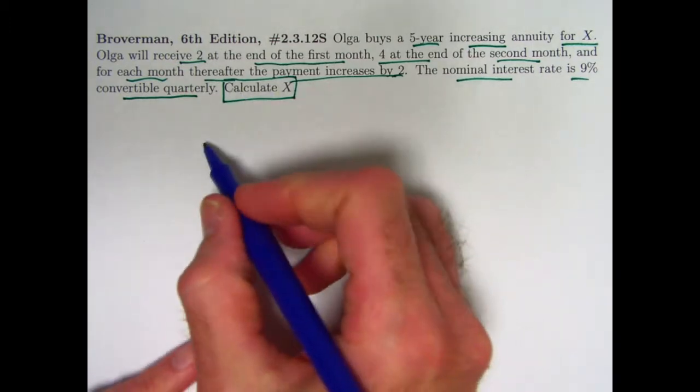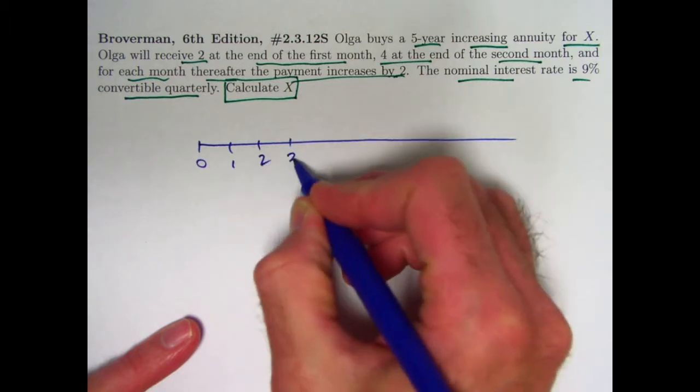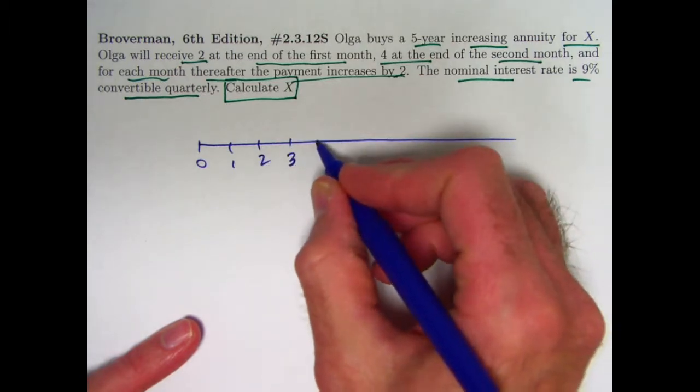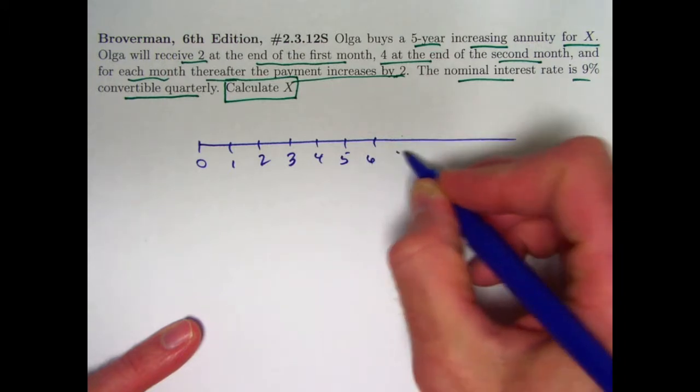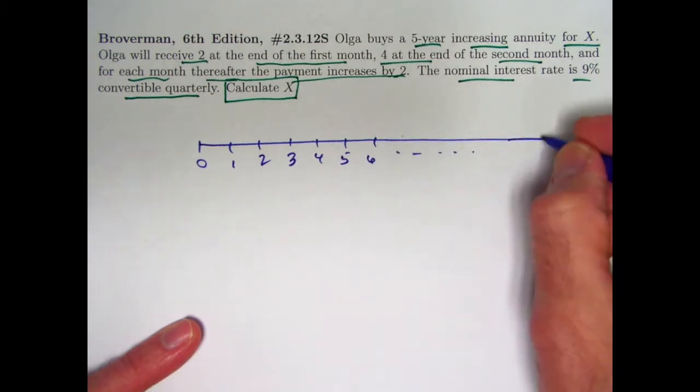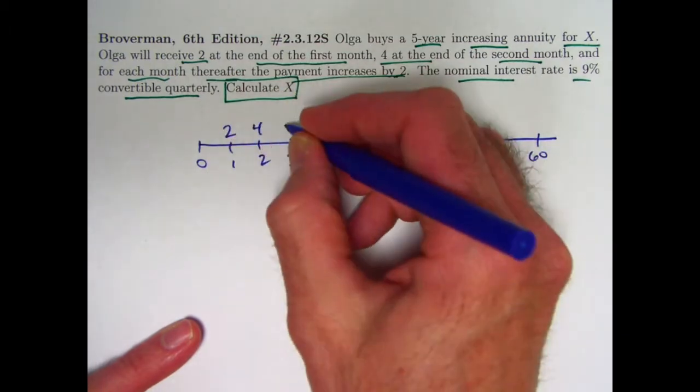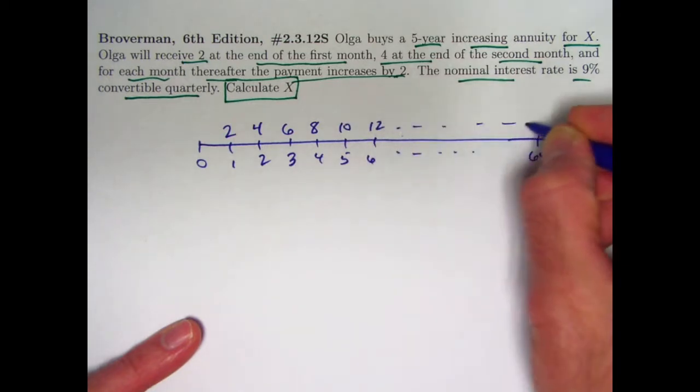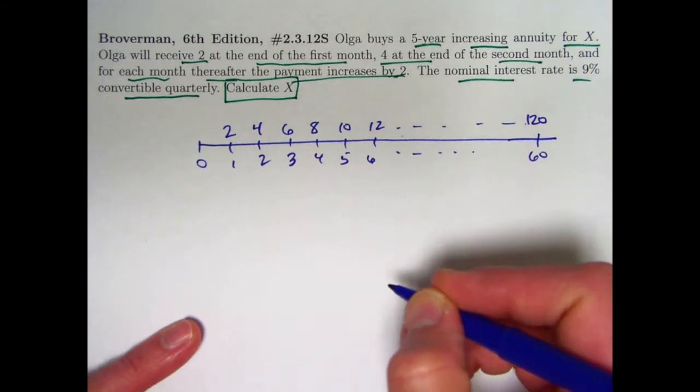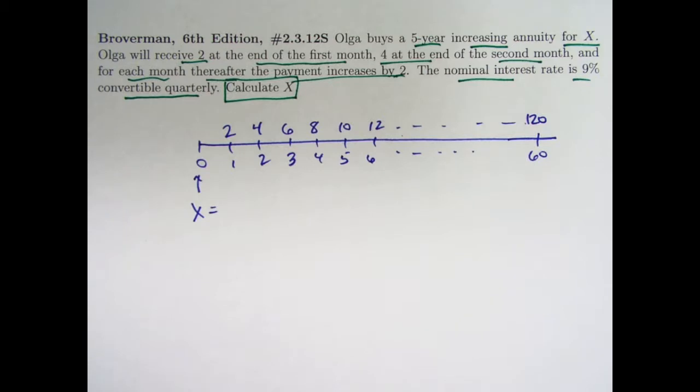Here's our timeline. Let's mark off the months: zero, one, two, three. A quarter of a year is three months. The interest of nine percent is convertible quarterly. We are going for five years, so that would be 60 months. A payment of two at time one, a payment of four at time two. We keep going up by two, which would make the last payment at month 60 be 120. We want to calculate X, the present value of this annuity at time zero.